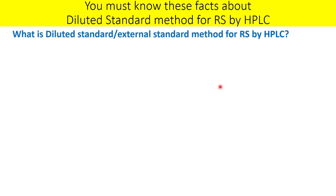People often use the highest unknown impurity (HUI) specification to decide on the diluted standard concentration. For example, if the highest unknown impurity specification for your product is not more than 0.5%, you can consider 0.5% as the concentration for the diluted standard. You can prepare the diluted standard using a reference or working standard of the API, or if you prefer not to use the API, you can also use the test sample for diluted standard preparation.